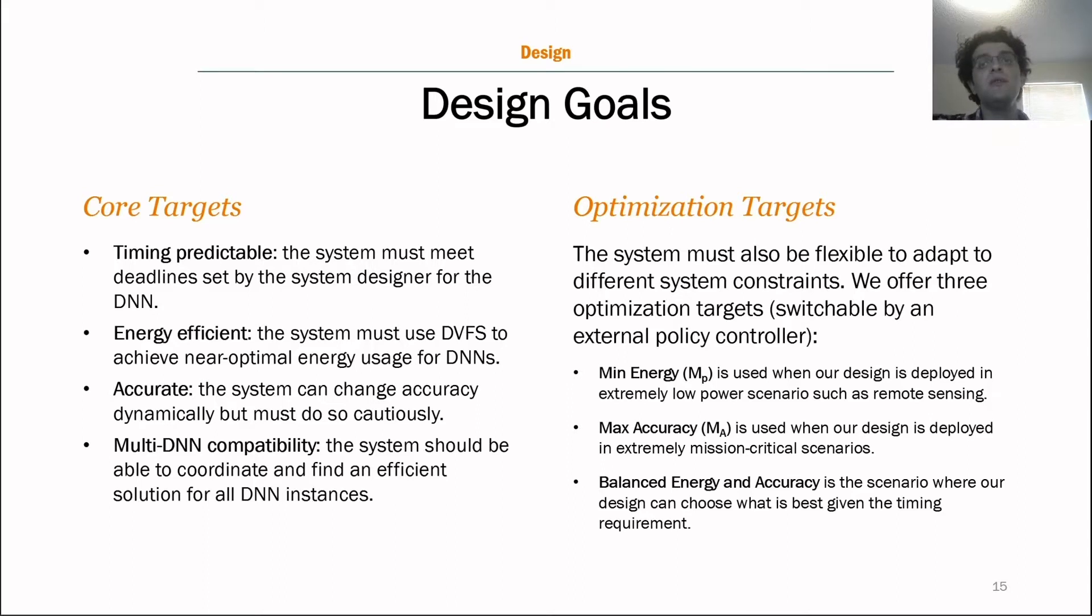Therefore, before we begin, we set three optimization targets for the three typical scenarios we have identified. We have minimum energy, which we show as ME, which is used when NeOS is used in systems with critically small energy envelopes, such as remote sensing devices, smartwatches, small drones, etc. Max accuracy, or MA, can be used when NeOS is deployed in extremely mission critical applications. Alternatively, in applications such as autonomous driving, an external policy controller can choose this configuration in certain scenarios. Finally, we have balanced energy and accuracy, which is the catch-all method where NeOS can try to optimize everything on its own in a balanced way. We do, however, give some control to the system designer or the external policy controller to adjust the sensitivity of this balancing act.